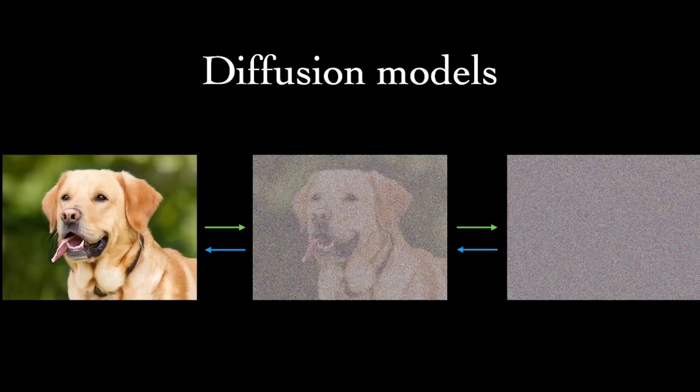The space continues to develop and we're starting to see all sorts of different types of models. One that's quite well known is something called diffusion. In simple terms, this works by gradually adding noise to an image and then the machine learns how to reverse it back to its original state. Once it's learned that process, the model can start to predict and generate new data and new frames of an image or video. Again, massively oversimplified.